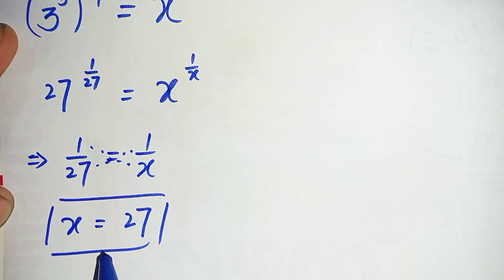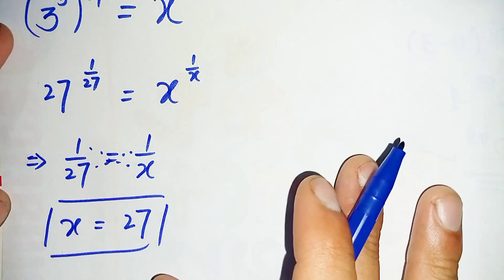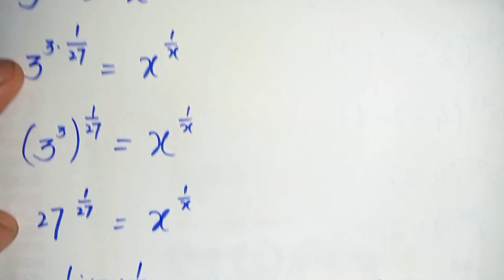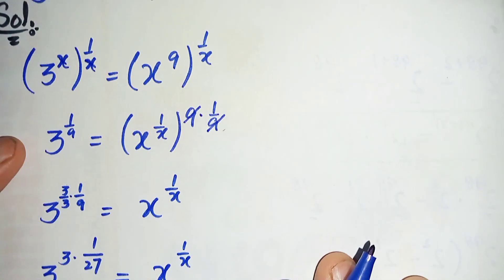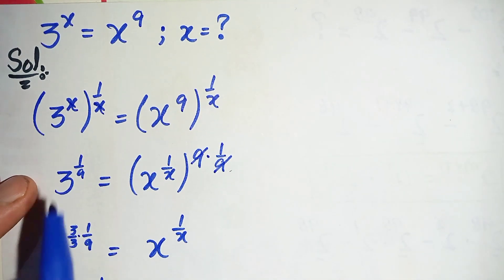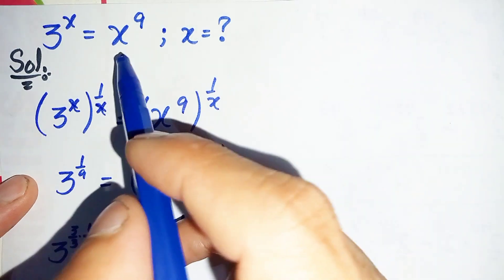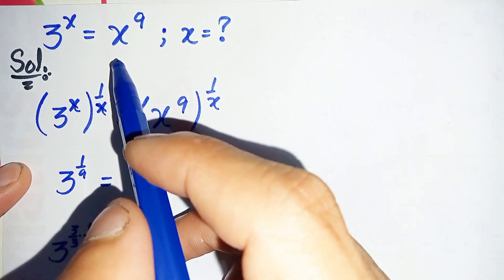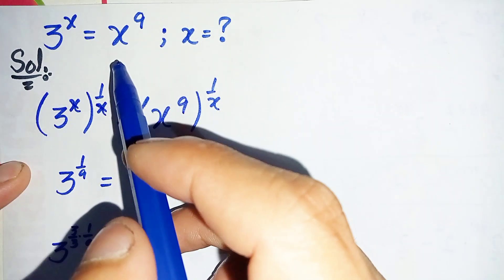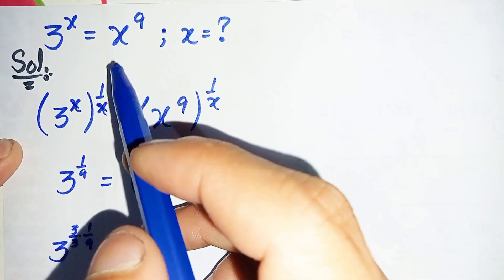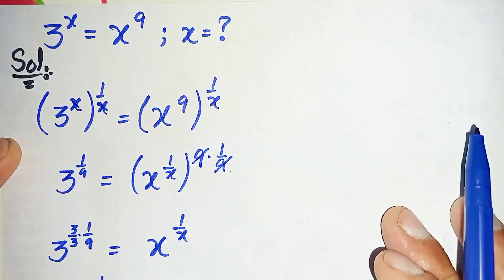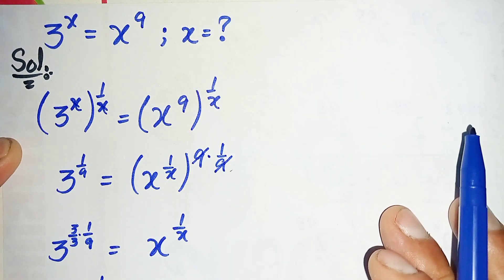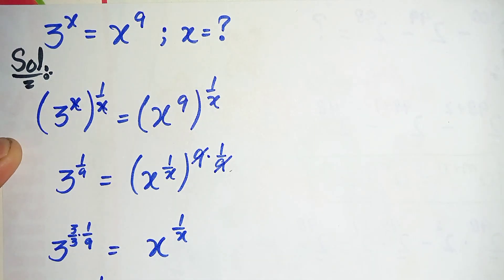So x equals 27 is the value of x and is the root of this nice exponential equation. If you liked this video, don't forget to subscribe to my YouTube channel. Thanks for watching.